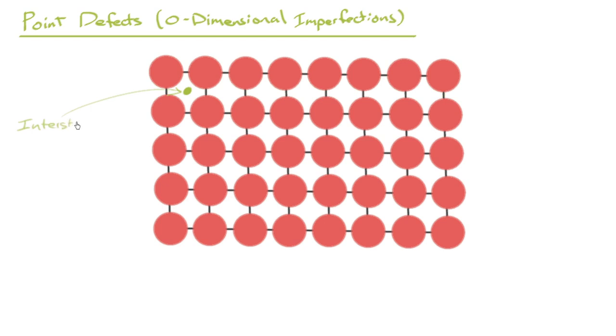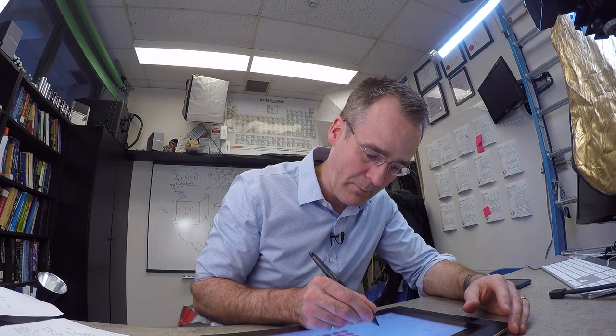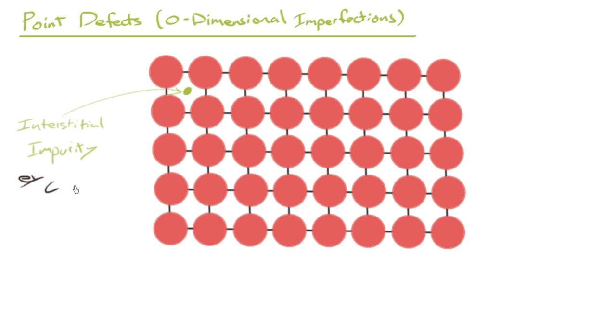We would call that an interstitial impurity. Again, don't think when you hear impurity that it's bad. These are, in fact, designed in many times on purpose. So for example, carbon in iron. Well, carbon is substantially smaller than iron, and it goes into these little spaces between the iron atoms in the lattice.